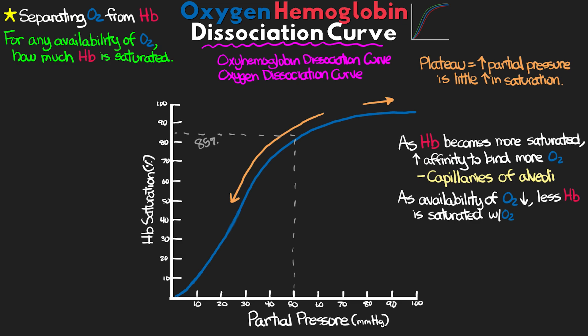We can think of this unloading occurring at the capillaries in end tissue that need the oxygen for cellular metabolism. There isn't much oxygen available here as it's being used, and thus hemoglobin will begin to unload its oxygen to make it available. As hemoglobin has less oxygen bound to it, it has less and less affinity for oxygen, so it actually wants to unload easier — and this accounts for the increasing drop in the curve. As oxygen levels get lower and lower, the unloading becomes easier and easier, increasing the rate of descent.